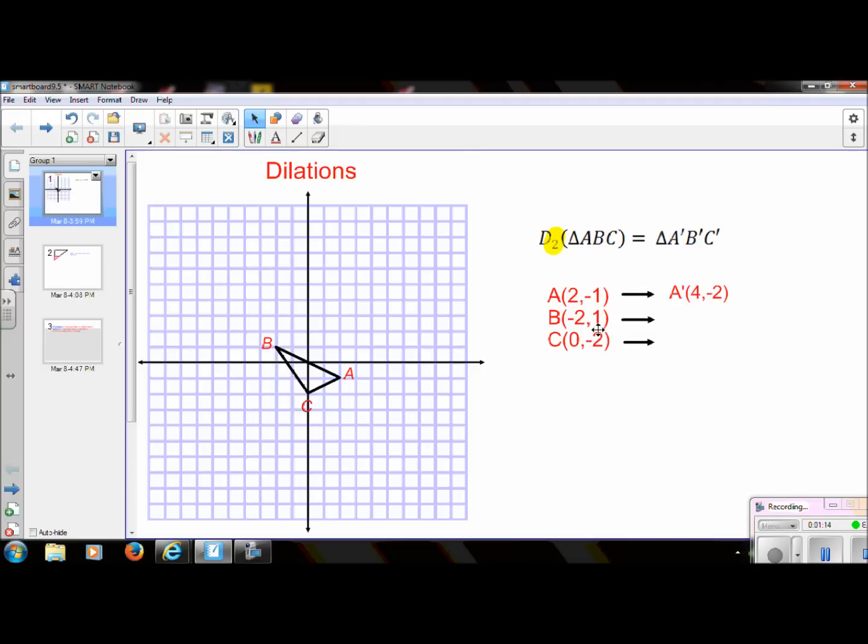So for B, and again, you always want to do this first and then graph it. Otherwise it just gets really complicated. So 2 times negative 2 would be negative 4. 1 times 2 is 2. Doing the same here, 2 times 0 would be 0, and 2 times negative 2 would be negative 4.